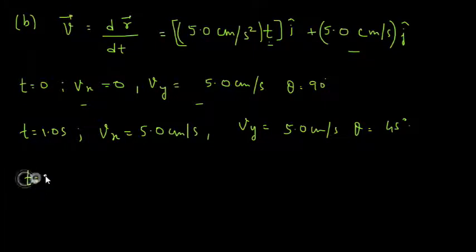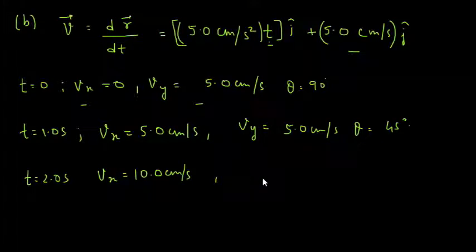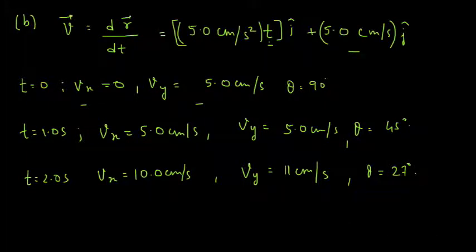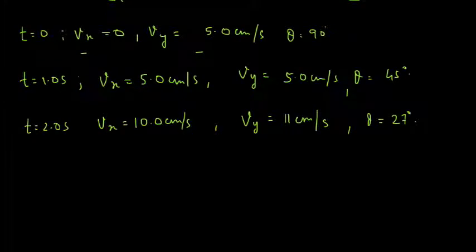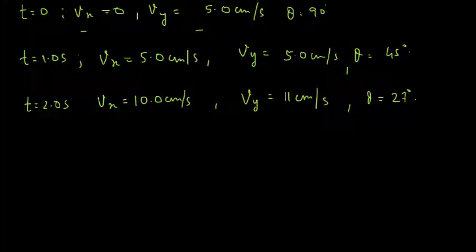At t = 2 s: vx = 10 cm/s, vy = 5 cm/s, direction θ = 27°. So we have found the velocity components for all three values of t: 0, 1, and 2 seconds.